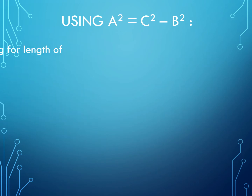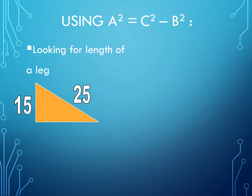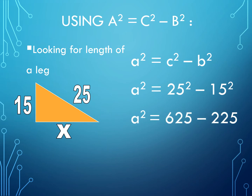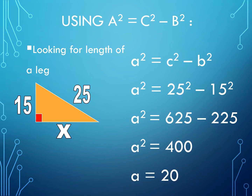Now let us have another one, looking for the length of a leg. To compute for side X, we use C squared minus B squared. Substituting all the values: 25 squared minus 15 squared is equal to 625 minus 225. 625 minus 225 is 400, and the square root of 400 is 20.